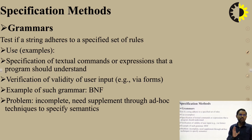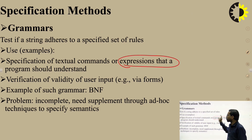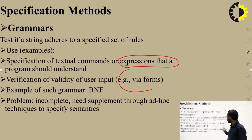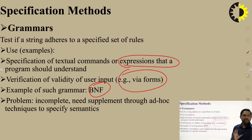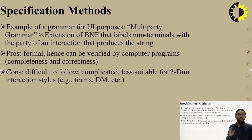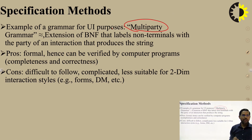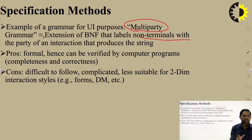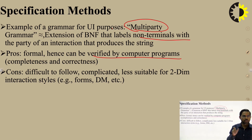In the specification method, we work with grammars. A grammar is a specific set of rules — for example, specification of textual commands or expressions that a program should understand, and verification of the validity of user input like web forms. One such grammar type is BNF. The problem with grammar is that it is incomplete and needs supplementary ad hoc techniques to specify semantics. For UI, we use multi-party grammars, which are extensions of BNF grammar that label non-terminals with the party of interaction that produces the string.